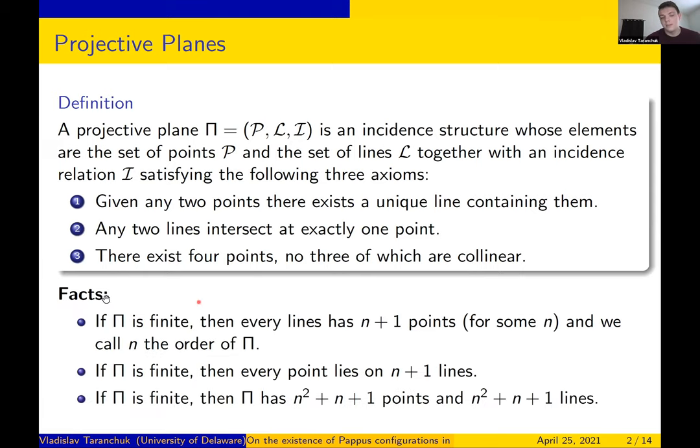So some quick facts: if pi is finite, which is the most interesting case, then you will have some positive integer n so that every single line will contain exactly n plus one points. Every point will lie on n plus one lines, and you'll have that the number of points is equal to the number of lines which is in total n squared plus n plus one.